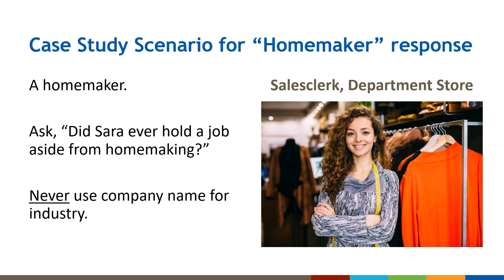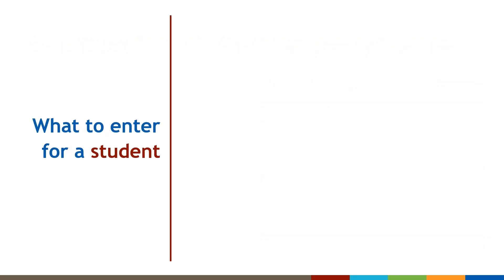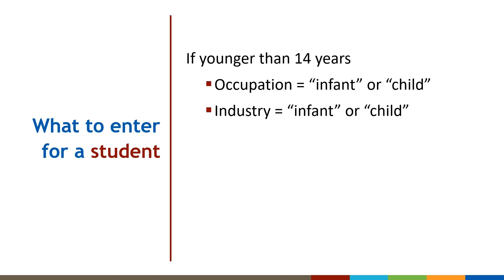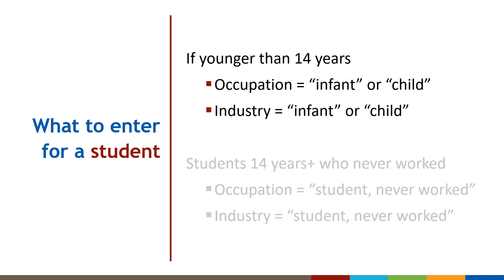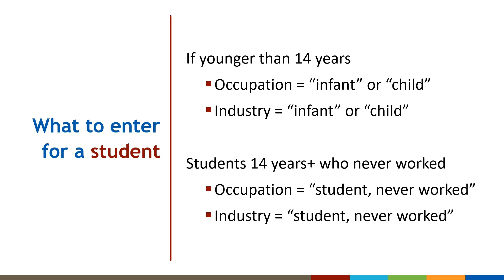Never use the company name — we'll discuss this more in a moment. For decedents under age 14, enter infant or child for both the usual occupation and kind of industry or business. For students age 14 and older, if they never had a paid job, enter student never worked as the occupation and the industry.